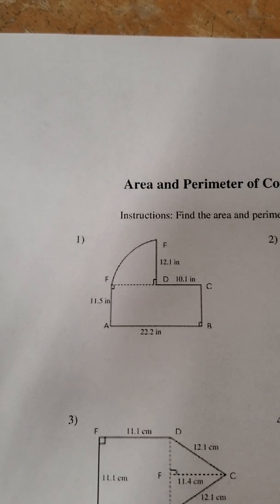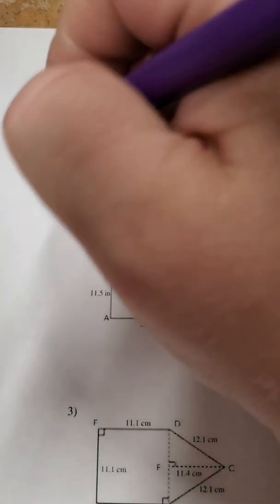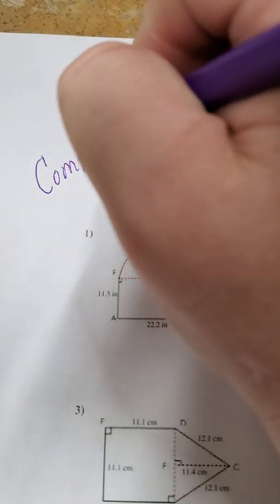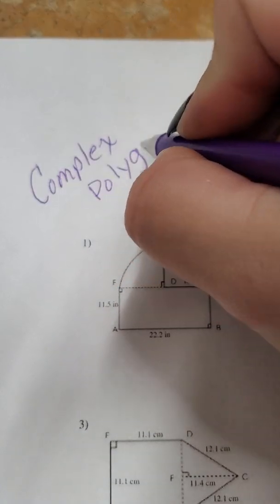Hi, I want to look at finding the area and perimeter of complex polygons. So a complex polygon or shape.